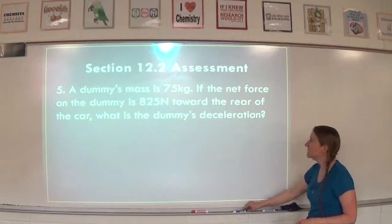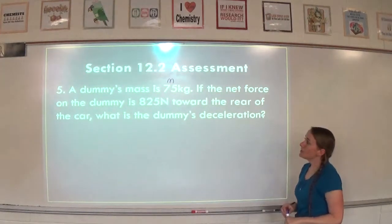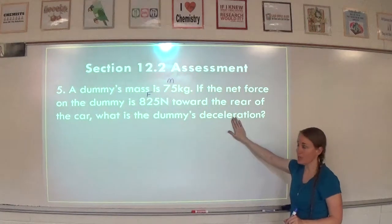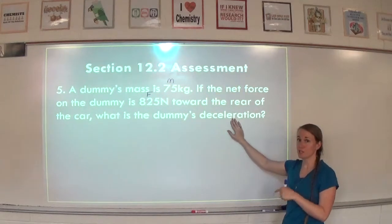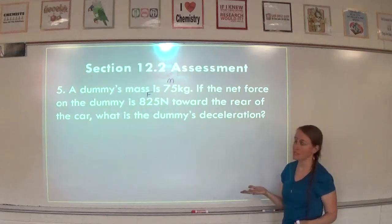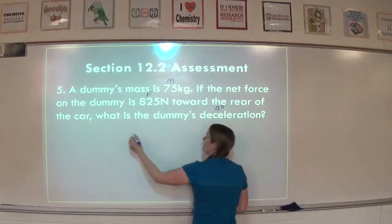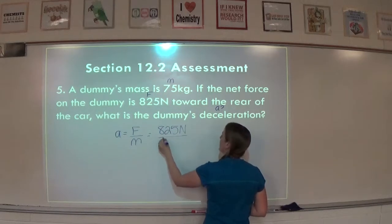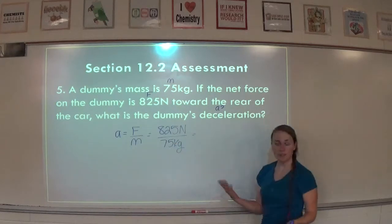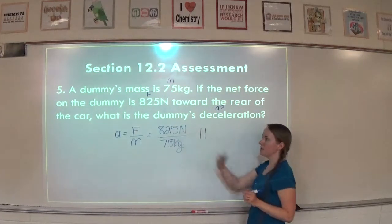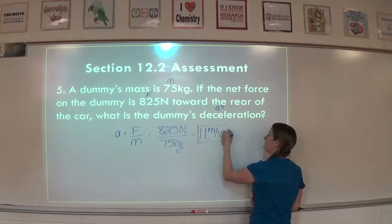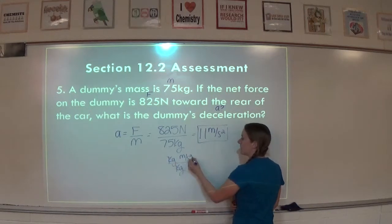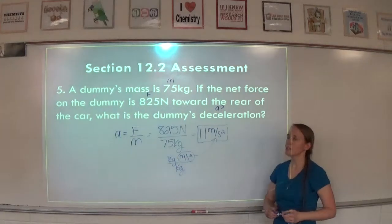A dummy's mass is 75 kilograms. If the net force on the dummy is 825 Newtons toward the rear of the car, what is the dummy's deceleration? Deceleration means negative acceleration, but since they call it deceleration we keep the number positive. Using A equals F over M: F is 825 Newtons, M is 75 kilograms. 825 divided by 75 equals 11. The unit for acceleration is meters per second squared — Newtons divided by kilograms cancels to meters per second squared — so the deceleration is 11 meters per second squared.